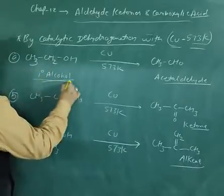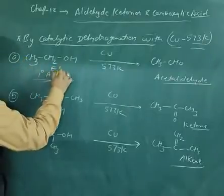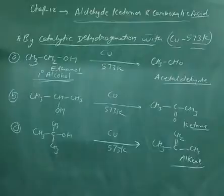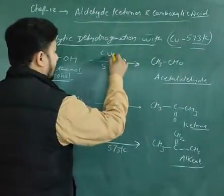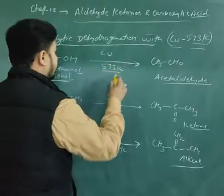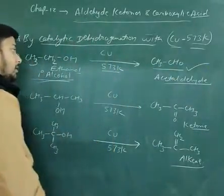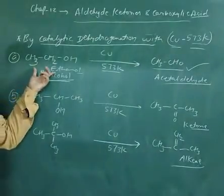In this reaction, this is a primary alcohol - that is ethanol. The name of this compound is ethanol and this is a primary alcohol. On oxidation or you can say reaction with copper as a catalyst at temperature 573 kelvin, it will form aldehyde. This copper at 573 kelvin helps in the oxidation of the alcohol.